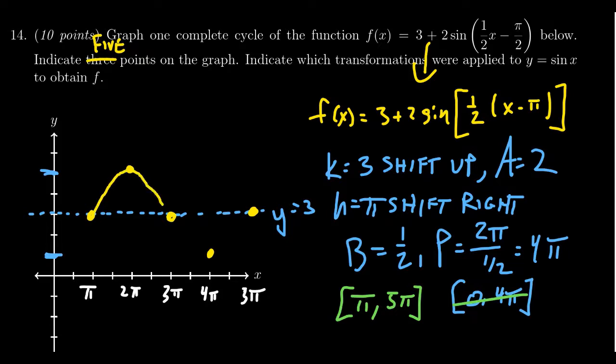Let's label them. So we're going to get (π, 3), we're going to get (2π, 5), we're going to get (3π, 3).